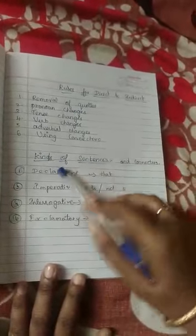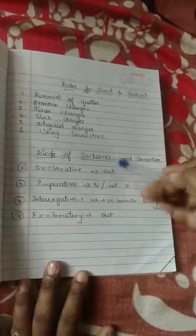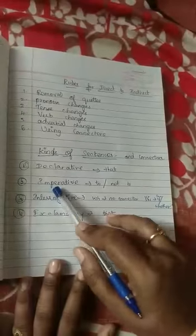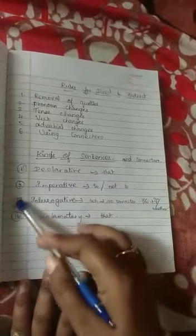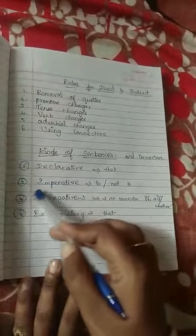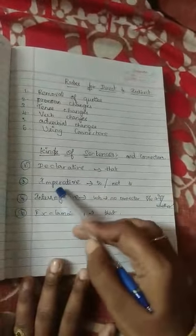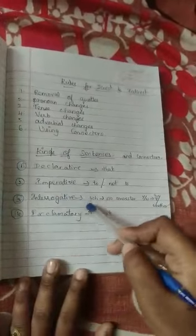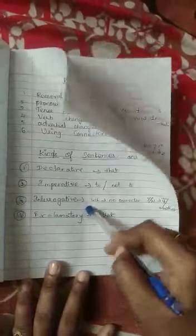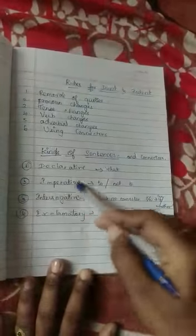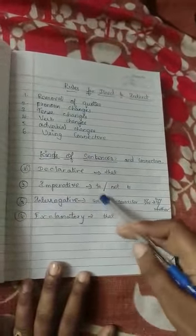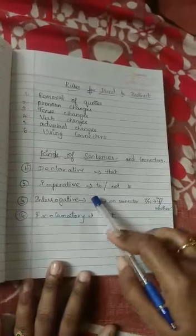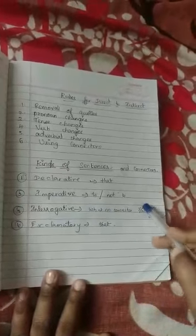For declarative, the connector is 'that'. For imperative, the connector is 'to' and 'not to'. Next, we will see interrogative. What do you mean by interrogative? A question mark symbol will be there — that is called an interrogative sentence. In interrogative, we have WH questions and yes-or-no questions.